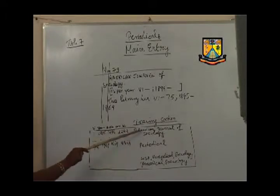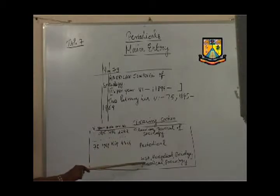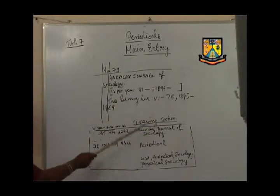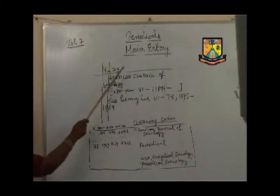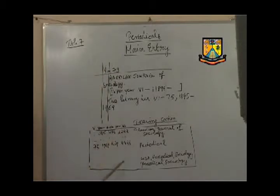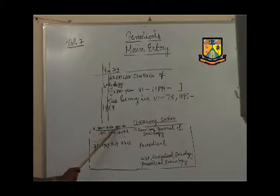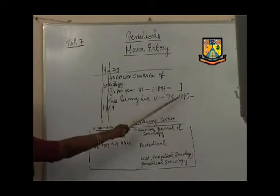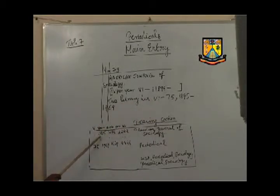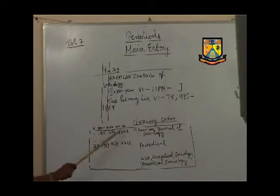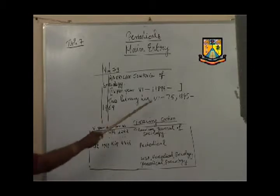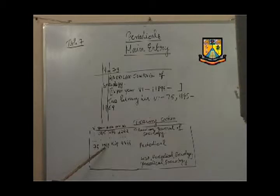We have three class index entries: one specific, one generic, and two optional — totaling four class index entries. For the left half of the tracing section for periodicals, we mention the volume, year, book number, and accession number, taken from the holding section of the main entry. Volume 1 in 1895 is converted to book number M95 with the given accession number, then three dots, and the last volume — 75 in 1969 — with book number N69 and the given accession number.